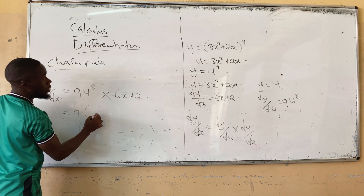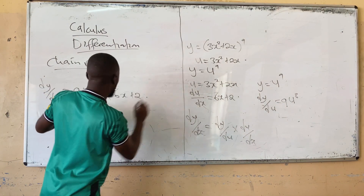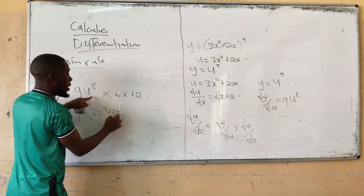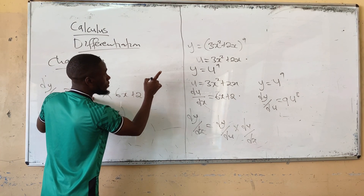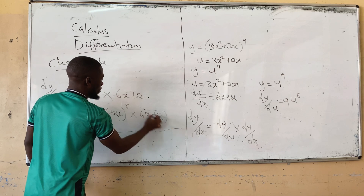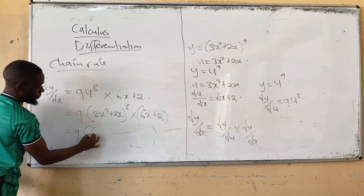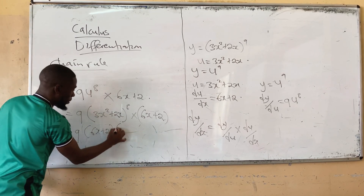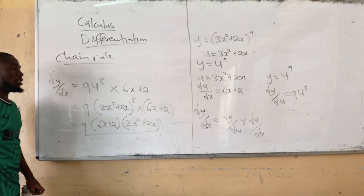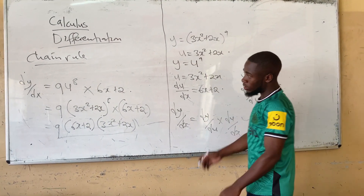What is u? u equals 3x squared plus 2x. So substituting back: dy/dx equals 9 times (3x squared plus 2x) to the power 8, multiplied by (6x plus 2). This is the exact same answer as the shortcut method. So this is the formula method.